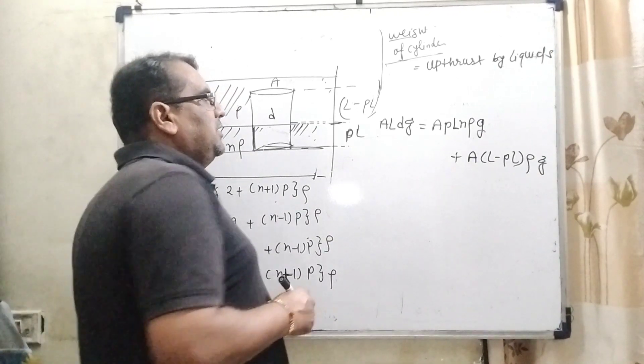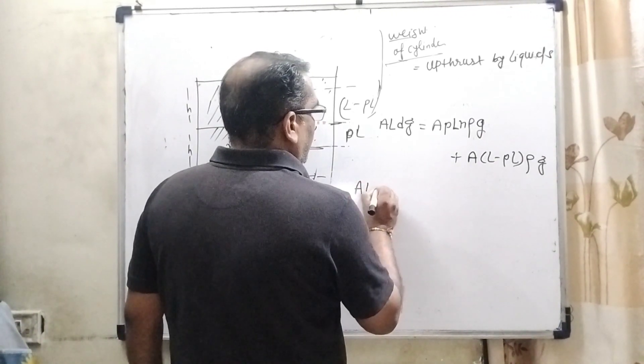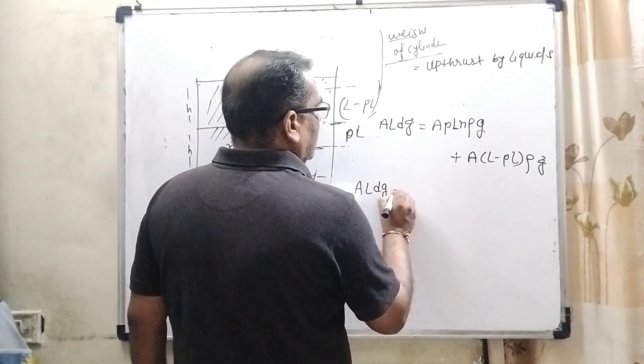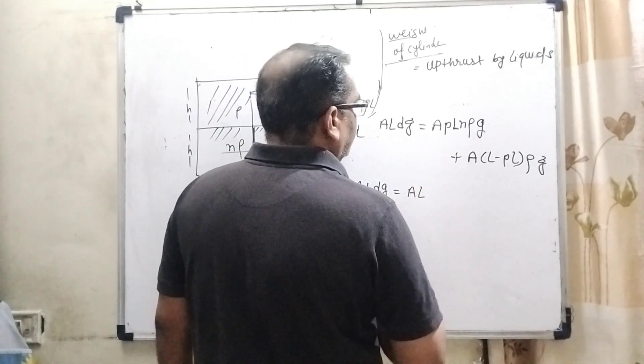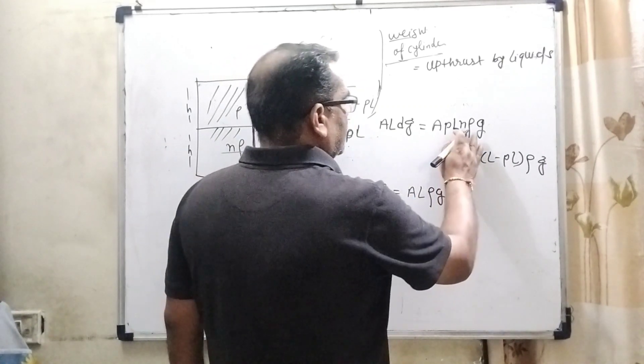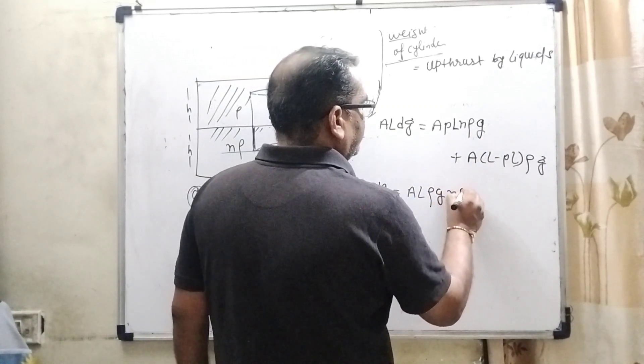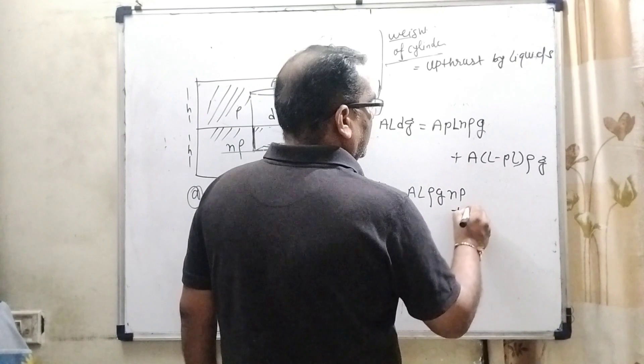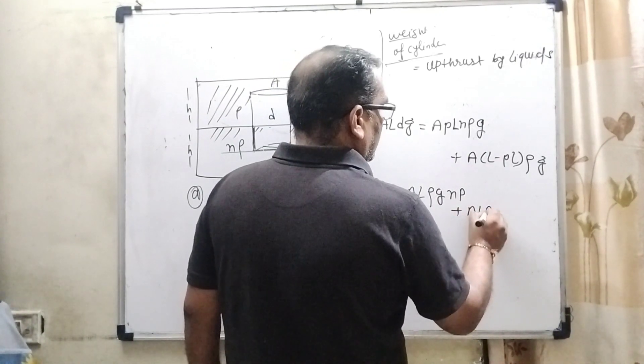Now simplifying this equation: ALdg equals ApLnρg plus A(L minus pL)ρg, which gives us the terms with n and p.